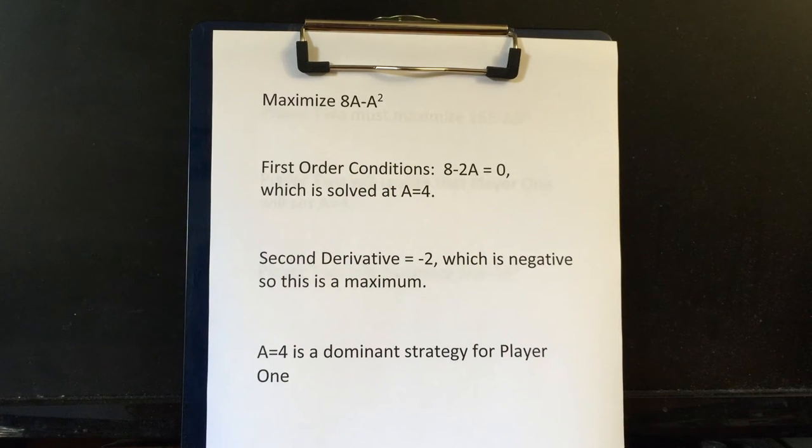We take the derivative, and when you take the derivative, what you get is 8 minus 2A. You set that equal to zero and that's solved by A equals four. So this is the first order conditions to solve a maximization problem.